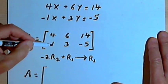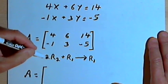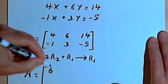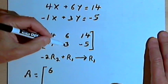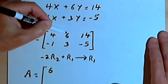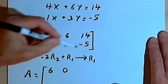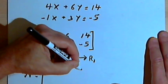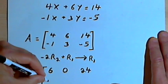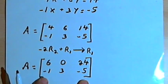I want to multiply negative 2 times row 2 and then add that to row 1, working column by column. For the first column: negative 2 times negative 1 is positive 2, plus 4 is 6. For the second column: negative 2 times 3 is negative 6, plus 6 is 0. For the third column: negative 2 times negative 5 is positive 10, plus 14 is 24. So the new row 1 is 6, 0, 24. Row 2 stays the same: negative 1, 3, and negative 5.